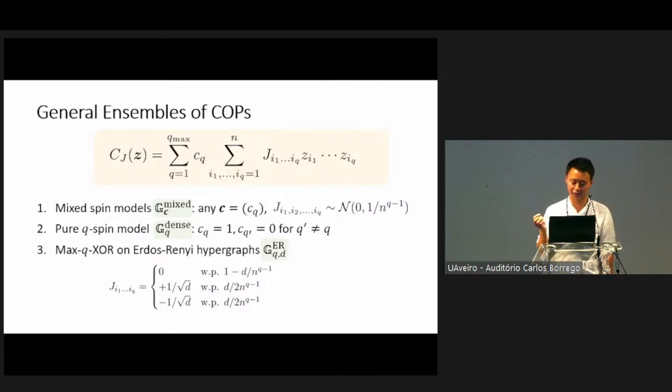You can also consider a problem on sparse graphs, such as max-Q-XOR. This is a generalization of max-cut. You can define this on hypergraphs. For that case, the cost function essentially assigns a non-zero value to every possible Q-tuple of couplings with some probability D over 2 to the N to the Q minus 1 power. This is chosen so that, on average, each bit is supposed to interact exactly in D hyperedges. You can think of this as a sparse version of graph, but in the hypergraph generalization.